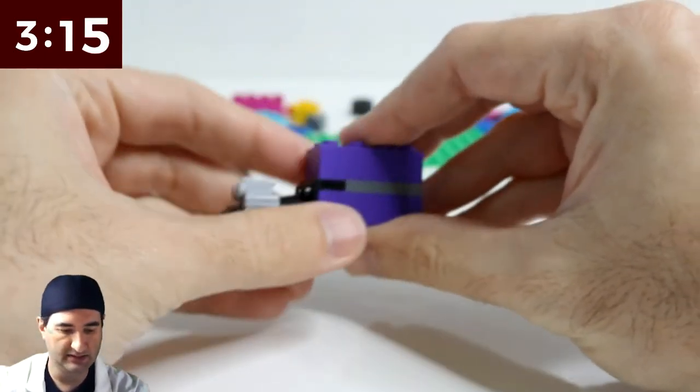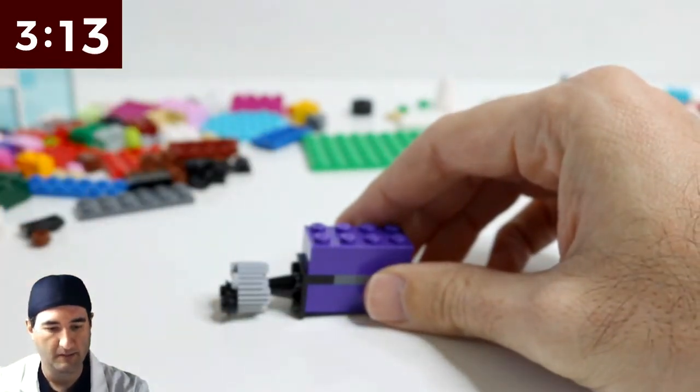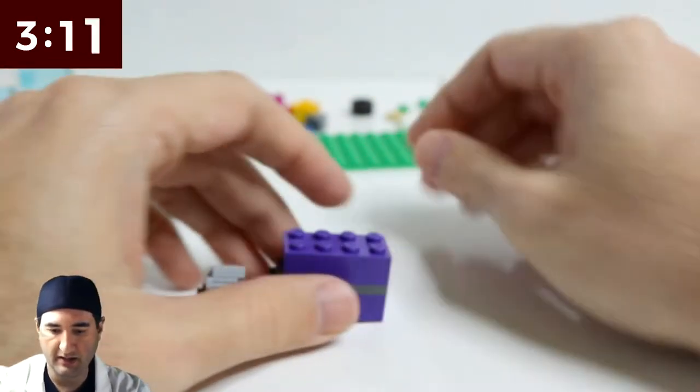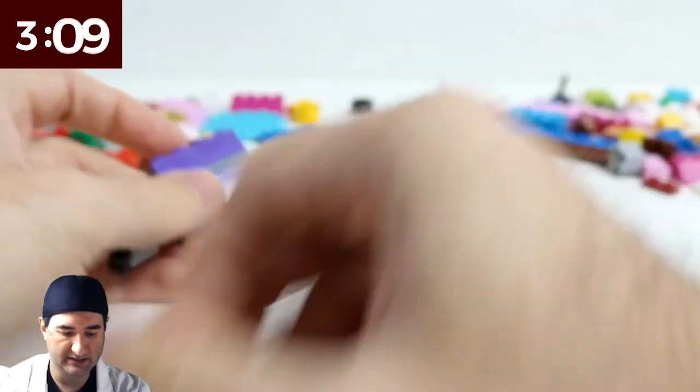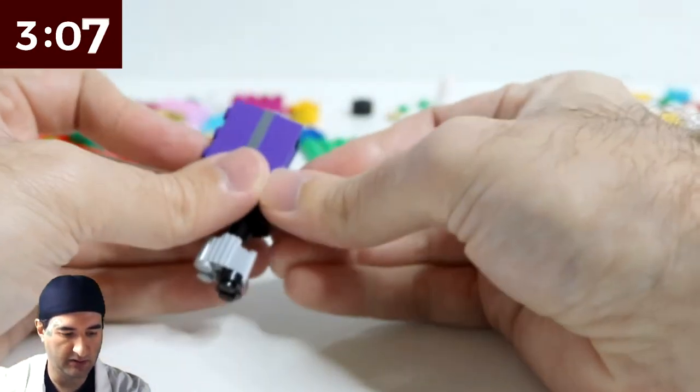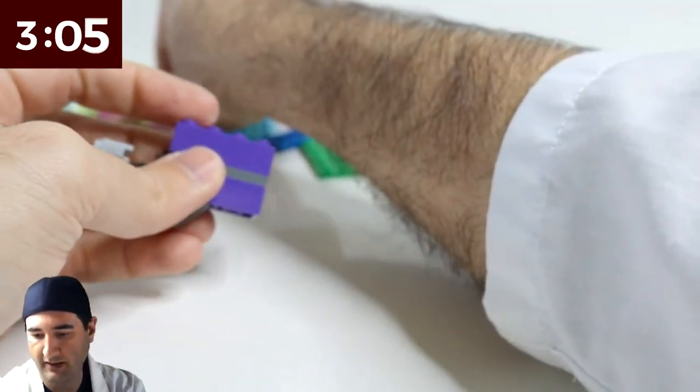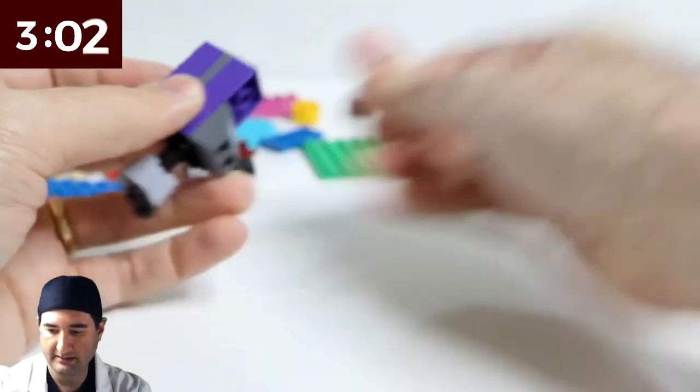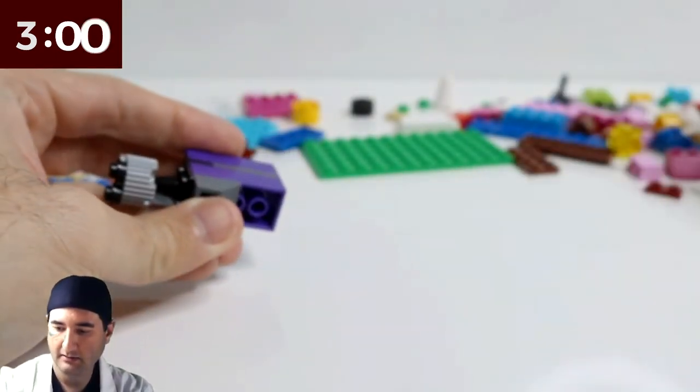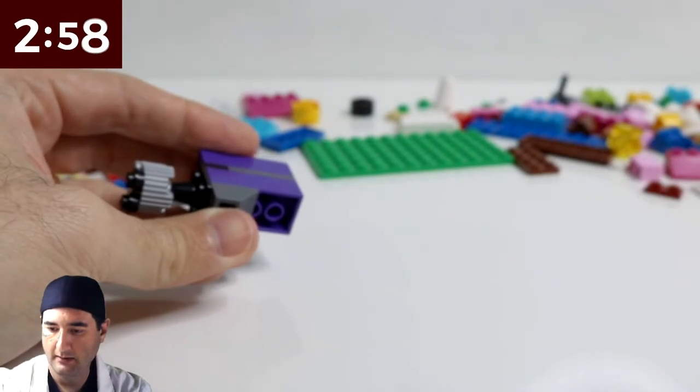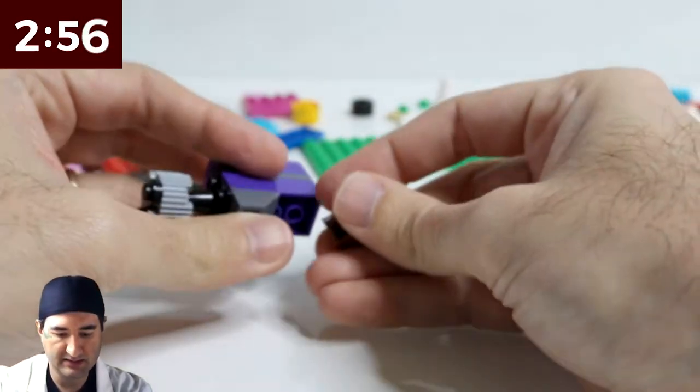So now we got a little head to the AT-AT. We got the body of the AT-AT. And now, what else do we need to figure out? We need to figure out legs. Now this is going to be hard, very hard to figure out. These legs are skinny and not easy to build.